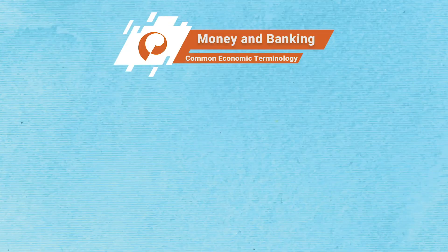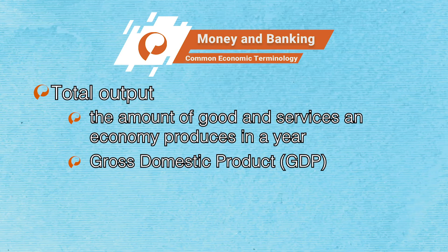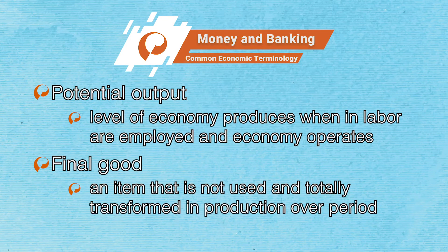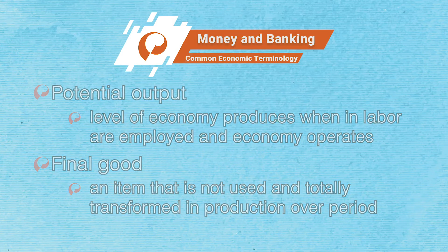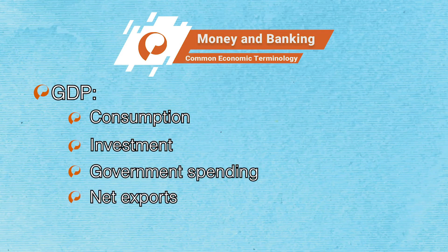Before diving into the theories, let's review some common economic terminology. Economists call total output the amount of goods and services an economy produces in a year, and they track total output using an economic indicator called gross domestic product, GDP. Potential output is the level of output the economy produces when inputs — labor in particular — are fully employed and the economy operates efficiently. GDP is the value of all final goods and services produced for the market over a period of time in a country. A final good is an item that is not used and totally transformed in production over the same period. GDP has four components: consumption, investment, government spending, and net exports — the difference between exports to other nations and imports from other nations.